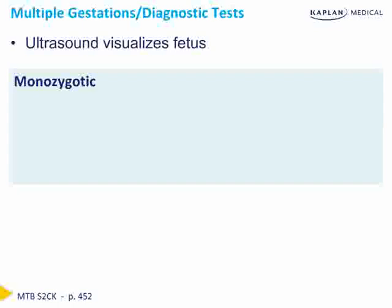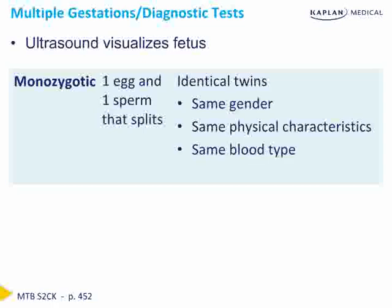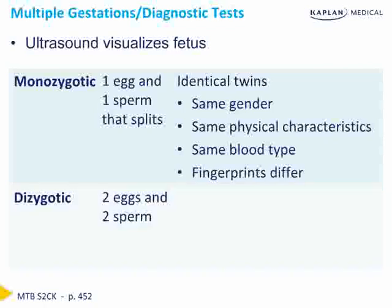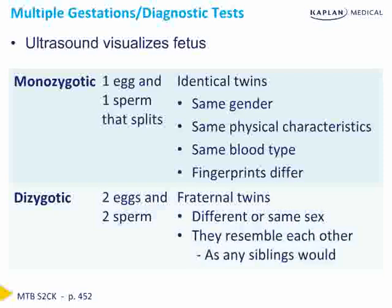There are two types important to remember for the Step 2 exam. Monozygotic twins result from one egg and one sperm that splits — these are identical twins. They are the same gender, have the same physical characteristics, the same blood type, but different fingerprints. Dizygotic twins result from two eggs and two sperm — also called fraternal twins. They can be different or same sex and resemble each other. The rates of monozygotic twins are fairly constant throughout the world, while dizygotic twin rates increase with maternal age and parity and are higher in families with a history of twins.